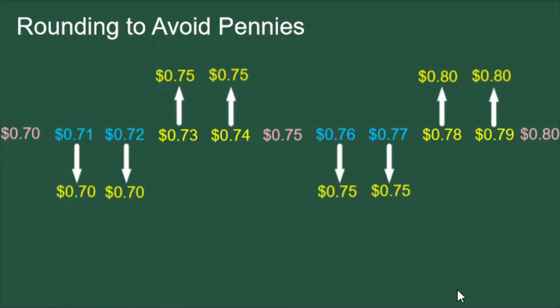In our example we can see all of the things that happen for all of the values between 70 cents and 80 cents, and it works the same way for the other values — between 60 and 70, between 30 and 40, etc.